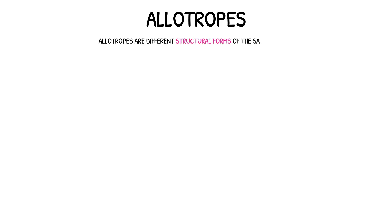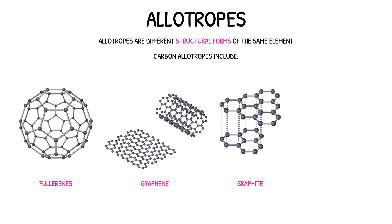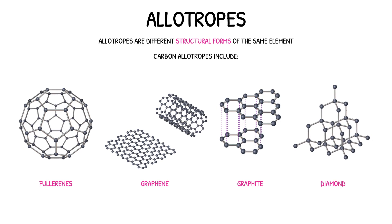An allotrope is a different structural form of the same element. The element carbon can exist as several different allotropes, some of which include fullerenes, graphene, graphite, and diamond. Each of these substances are made up of carbon atoms only, however the carbon atoms in each are arranged differently. Because of this, each of these allotropes will have slightly different properties and uses.